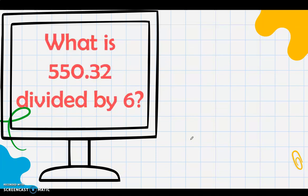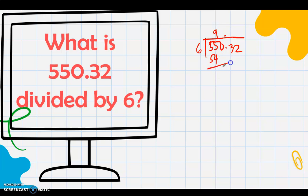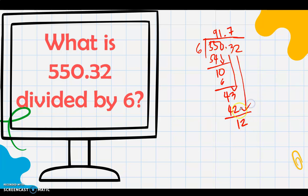What is 550.32 divided by 6? The divisor is a whole number, so no need to move the decimal point — just put the decimal point on top of the decimal point, then divide. 5 divided by 6 cannot be done, so use 55 divided by 6, which is 9, aligned to the second 5. That's 54, remainder 1, bring down 0: 10 divided by 6 is 1, that's 6, remainder 4, bring down 3: 43 divided by 6 is 7, that's 42, remainder 1, bring down 2: 12 divided by 6 is 2, that's 12, no more remainder. The answer is 91.72.